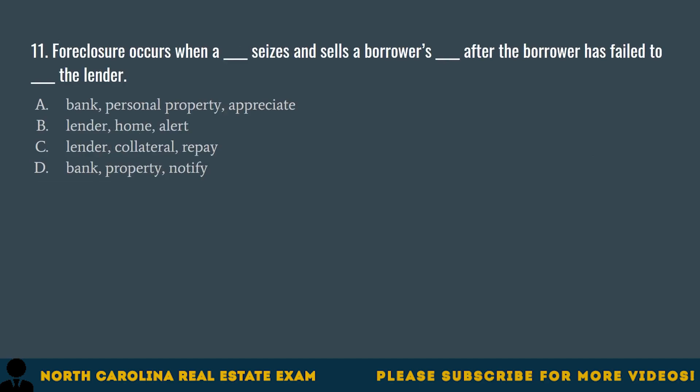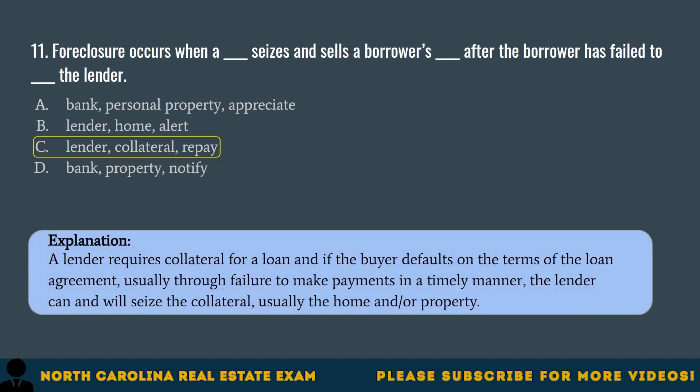Question 11. Foreclosure occurs when a blank seizes and sells a borrower's blank after the borrower has failed to blank the lender. A. Bank, personal property, appreciate. B. Lender, home, alert. C. Lender, collateral, repay. D. Bank, property, notify. The correct answer is C. Lender, collateral, repay. A lender requires collateral for a loan, and if the buyer defaults on the terms of the loan agreement, usually through failure to make payments in a timely manner, the lender can and will seize the collateral, usually the home and/or property.